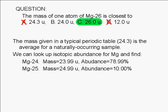We also find that magnesium-25 has a mass of 24.99 atomic mass units. It has a relative abundance of 10%. One out of every 10 magnesium atoms in nature has a mass of about 25 AMUs.